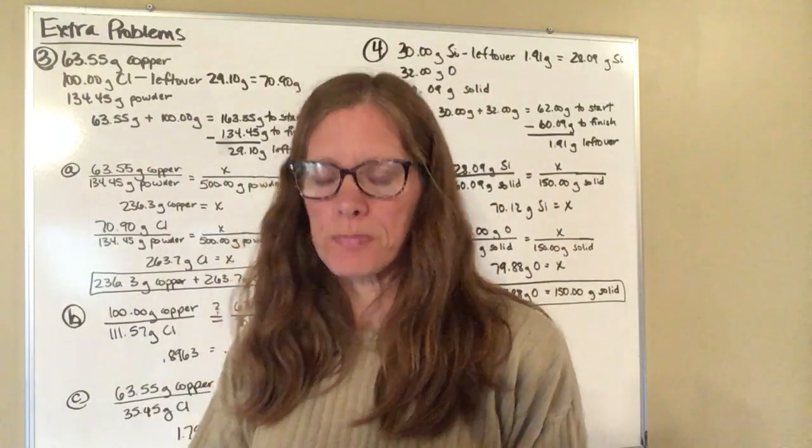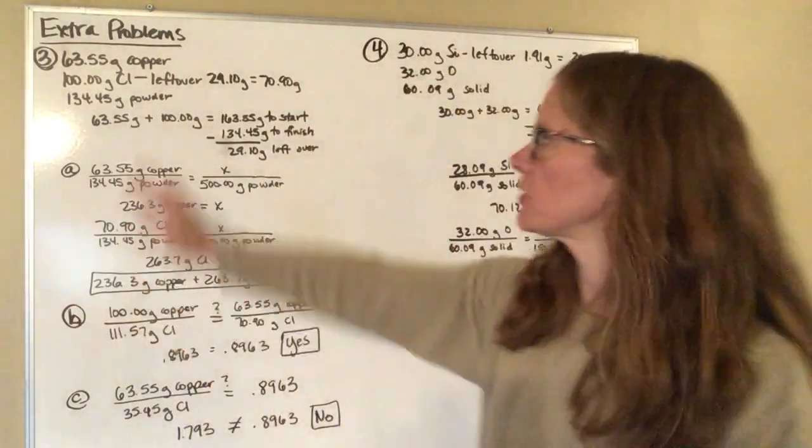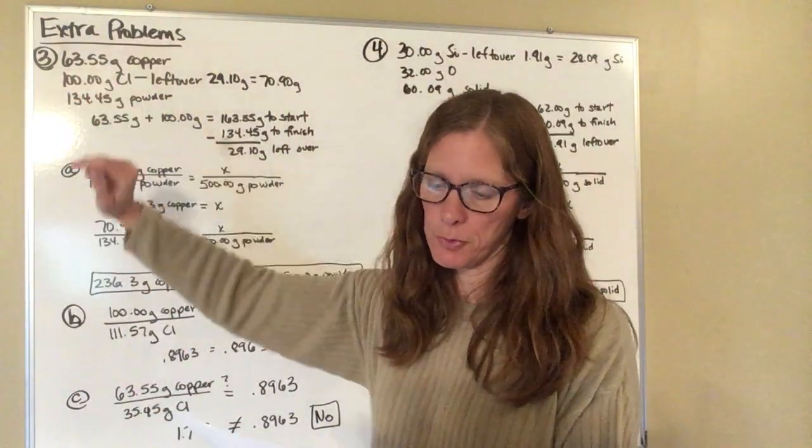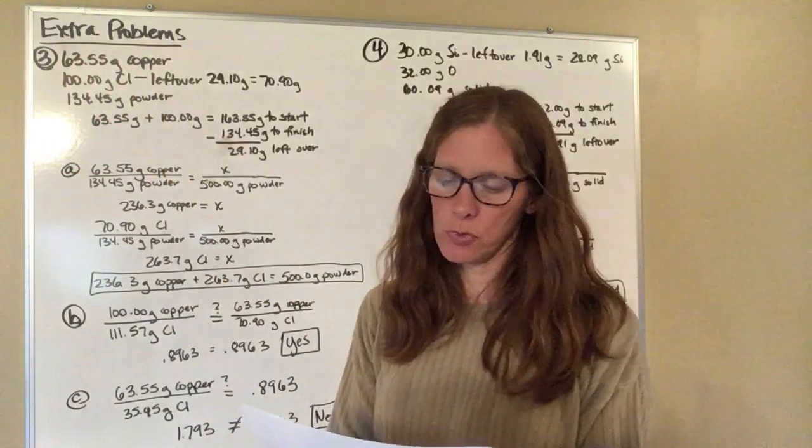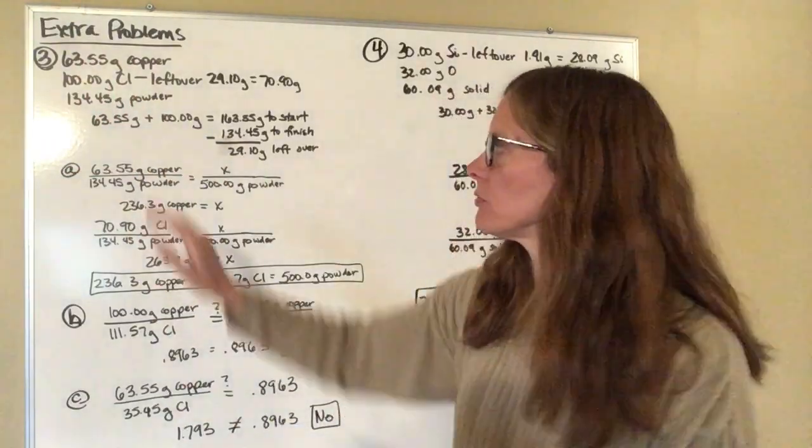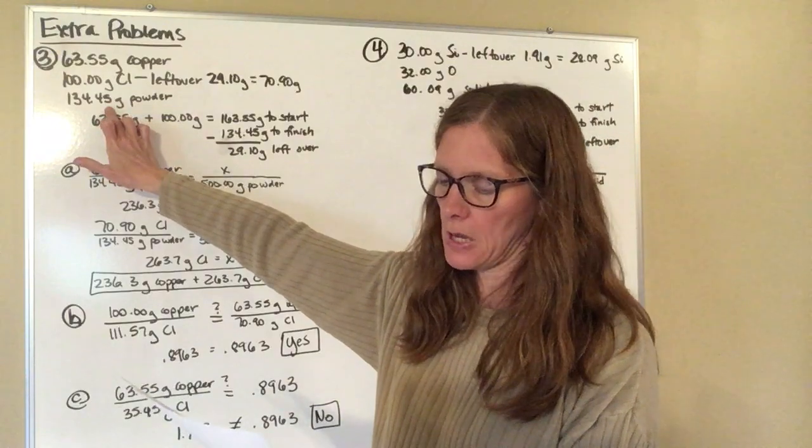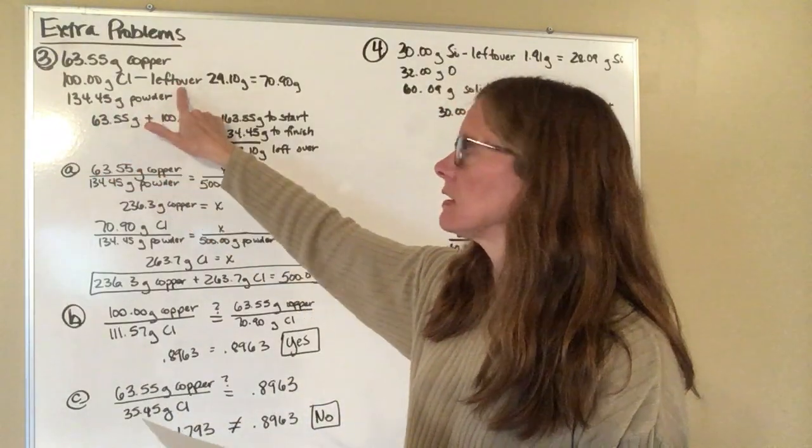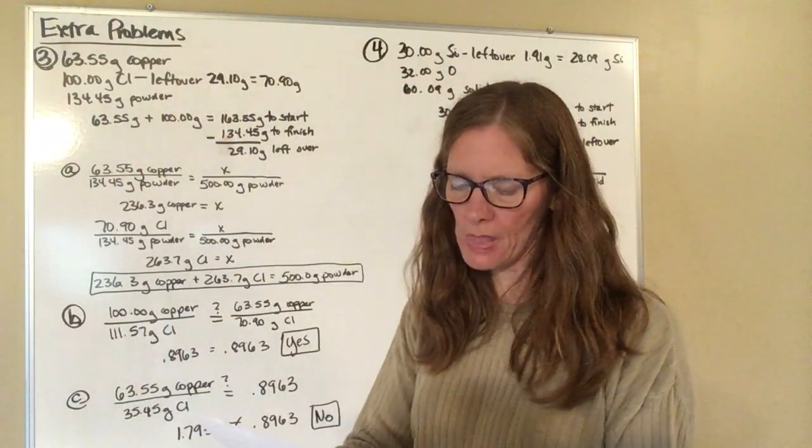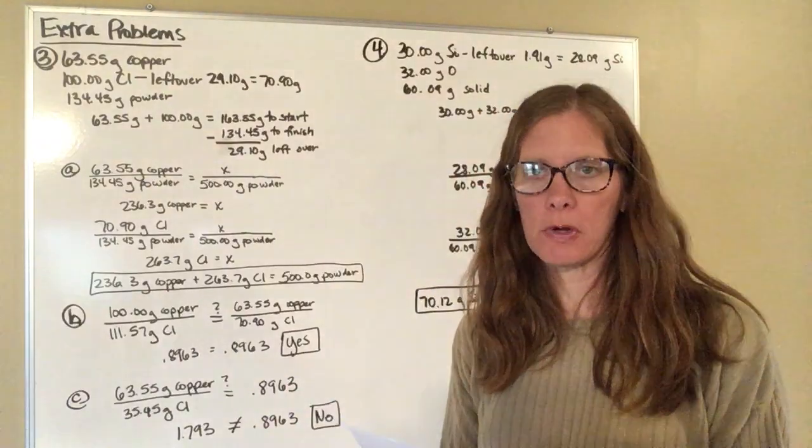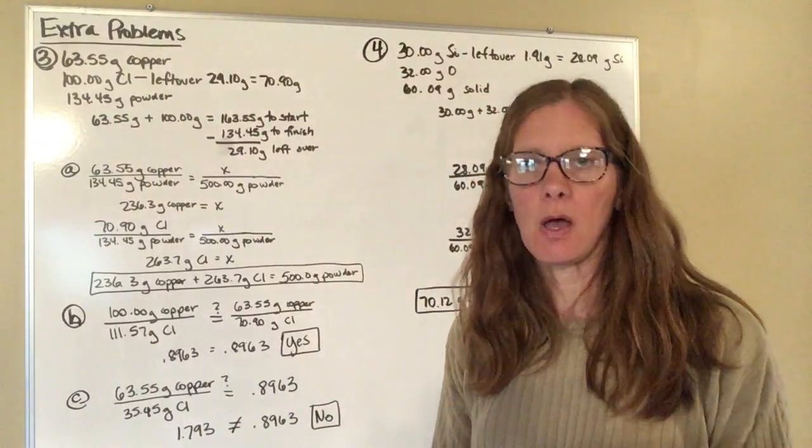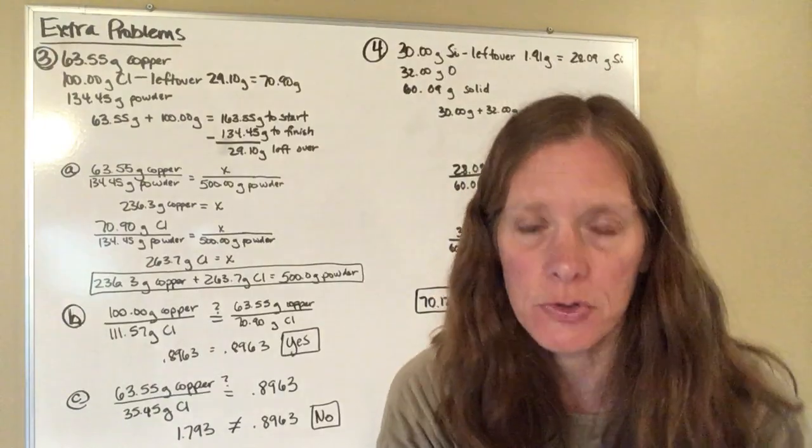So problem number 3, chemist combines 63.55 grams of copper with 100 grams of chlorine gas. The result is 134.45 grams of light blue powder and some leftover chlorine. So part A says how much copper and chlorine are needed to make 500 grams of the light blue powder with no leftovers.